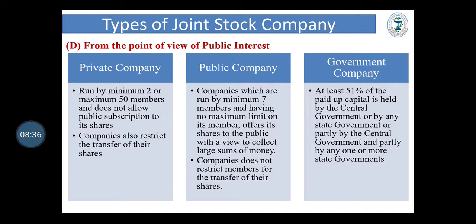Private company: run by minimum 2 or maximum 50 members; does not allow public subscription to its shares, and also restricts the transfer of shares. Public companies: run by minimum 7 members with no maximum limit; they offer shares to the public with a view to collect large amounts of money and do not restrict members from transferring shares. Government company: at least 51% of paid-up capital is held by central government, state government, or partially by both central and state government.